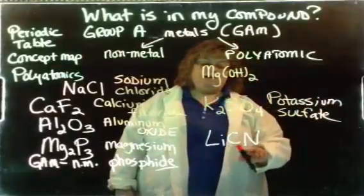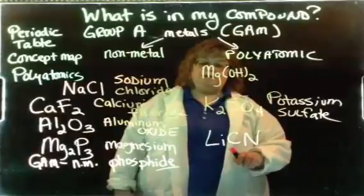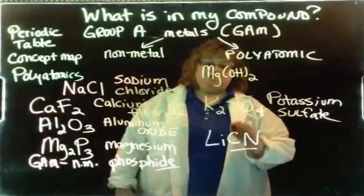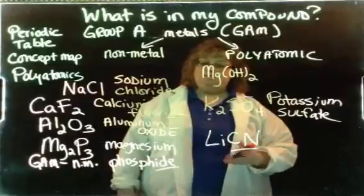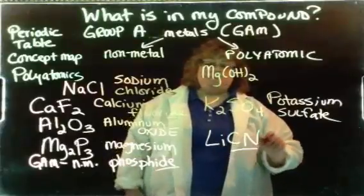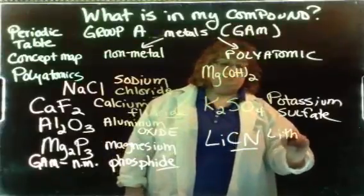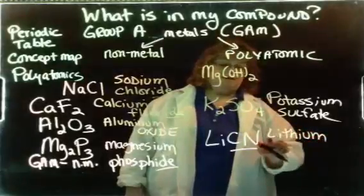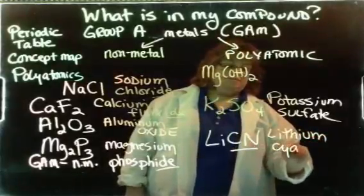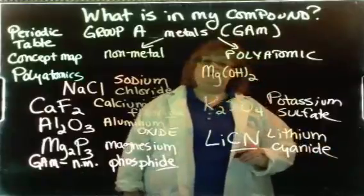We're going to go down here to the lithium compound. Again, if you don't recognize this as being a polyatomic, you'll see it as a carbon and nitrogen. But it really is one of those polyatomics back there. So the rule is, name the metal, and then name the polyatomic. And this is cyanide, lithium cyanide.